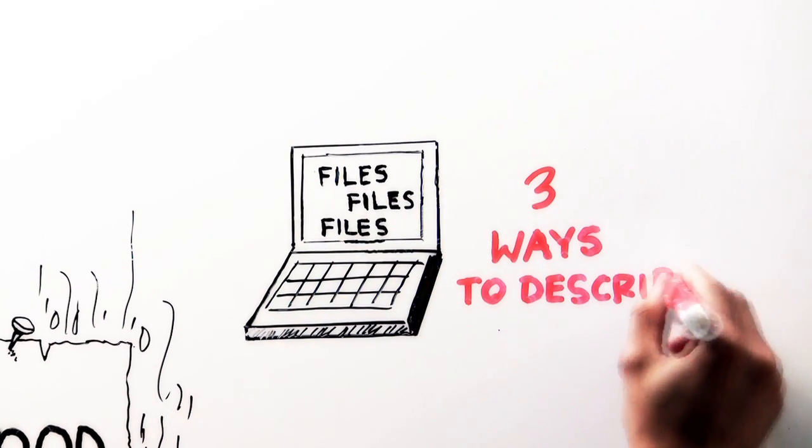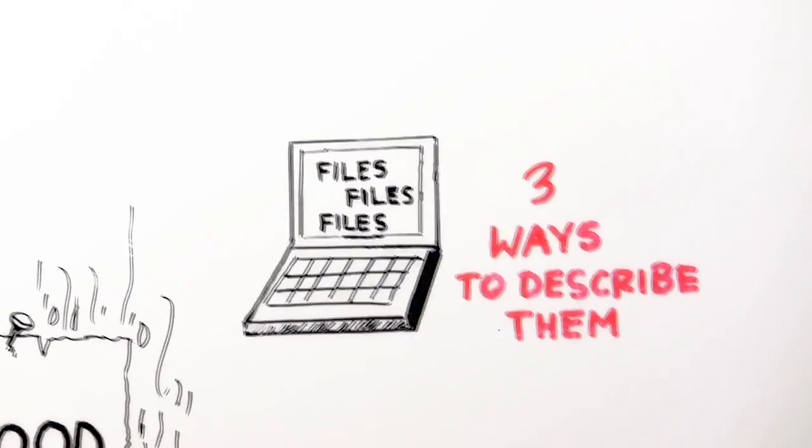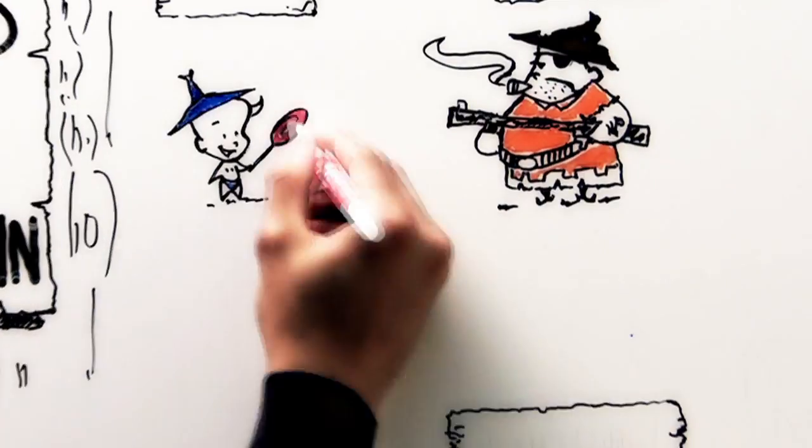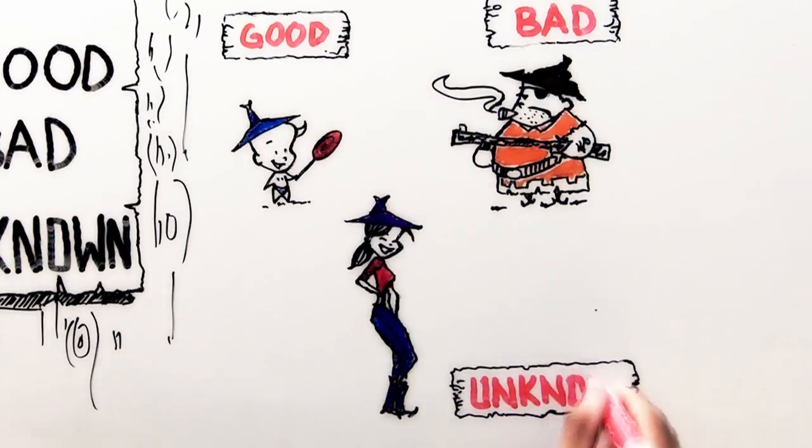There are three ways, there are three states to describe a file: good, bad, ugly, or unknown.